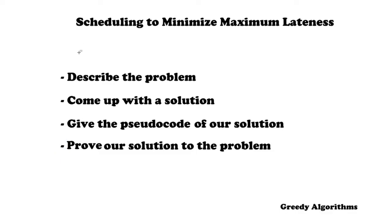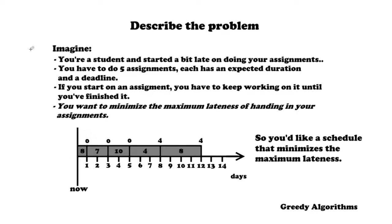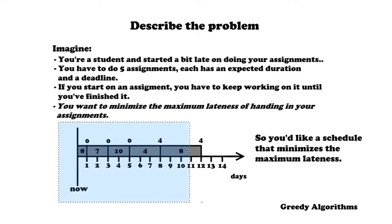So let's start with describing the problem. Imagine you're a student who started a bit late on doing your assignments — not too hard to imagine, right? You have to do five assignments, each with an expected duration and a deadline. If you start on an assignment you have to keep working on it until you've finished it. The most important thing is that you want to minimize the maximum lateness of handing in your assignments. For example, the first assignment has a deadline at day eight and takes one day to complete, so the lateness is zero since you hand it in on day one. The next assignment has a deadline of day seven, takes two days, and is also handed in on time by day three.